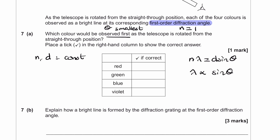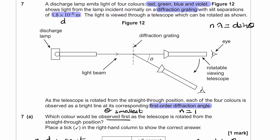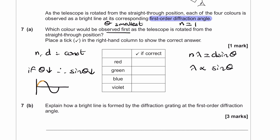From the equation, since n and d are constant, λ is proportional to sin θ. We want to find which wavelength corresponds to the smallest θ. If θ decreases, sin θ decreases as well. For a diffraction grating, θ only goes from 0 to 90 degrees, so the telescope can only be rotated 90 degrees. In this range, as θ increases, sin θ increases too — they move together. So if θ goes down, sin θ goes down, and therefore λ must also go down.